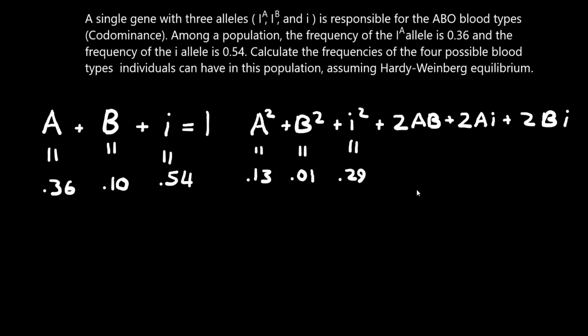2AB equals 0.072, 2A times I is 0.39, and finally 2B times I is 0.11. Now all of these should add up to 1, and if they don't, you probably have to redo one of your calculations.